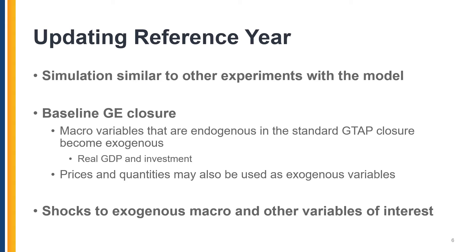Macro variables that are endogenous in the standard GTAP closure may become exogenous and shocked according to historical changes or future projections. For example, real GDP is endogenous in the standard GTAP closure but may become an exogenous variable in the baseline closure. Other variables that are endogenous in the standard GTAP closure — such as prices and quantities — may also become exogenous in the baseline closure.